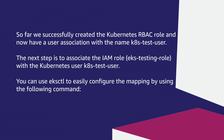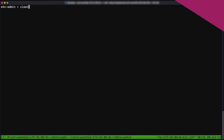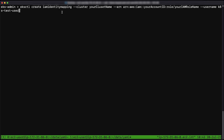So far we have successfully created the Kubernetes RBAC role, and now have a user association with the name k8s-test-user. The next step is to associate the IAM role — for example, eks-testing-role — with the Kubernetes user k8s-test-user. You can use eksctl to easily configure the mapping by using the following command. Remember to replace your cluster name, your account ID, and your IAM role name with your values.